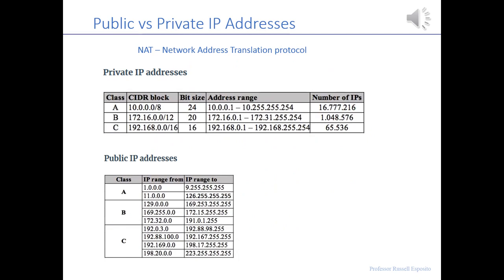This slide talks about different IP addresses. There are private IP addresses that reside internally in networks, and there are public IP addresses. The private IP addresses inside the firewall never get communicated outside the network through the internet — they get converted to a proxy, a public IP address. Private IP addresses have certain ranges, and public IP addresses have different ranges. There's a function called NAT — network address translator — that maps these two together, taking a private IP, associating it with a public IP, and sending it out to the internet so your private address stays private.